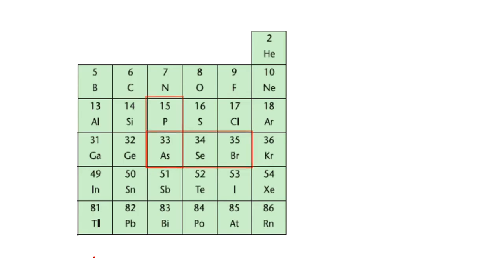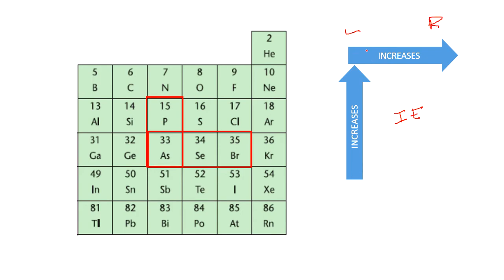In the question, they ask about phosphorus, arsenic, selenium, and bromine. As we see, the ionization energy trend is from left to right it is increasing, and from top to bottom it is decreasing, or bottom to top it is increasing.